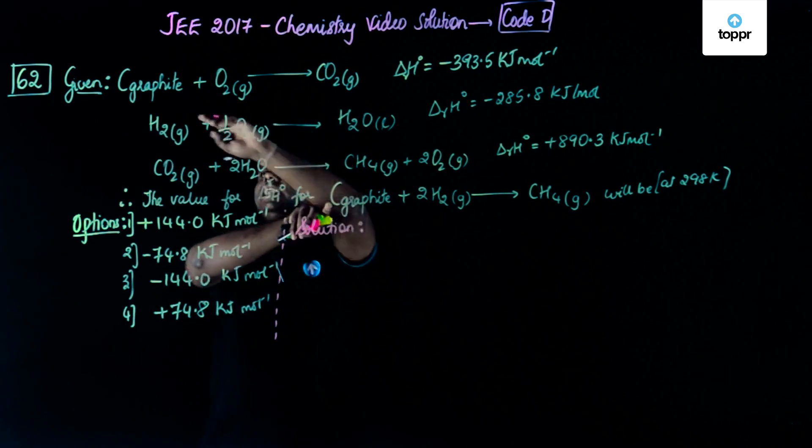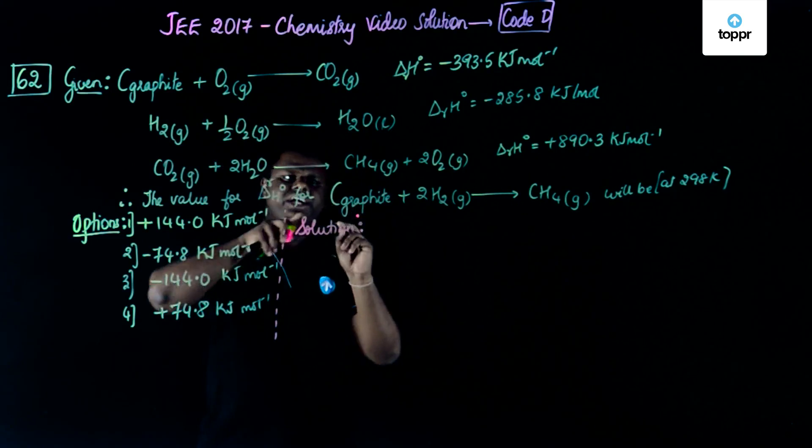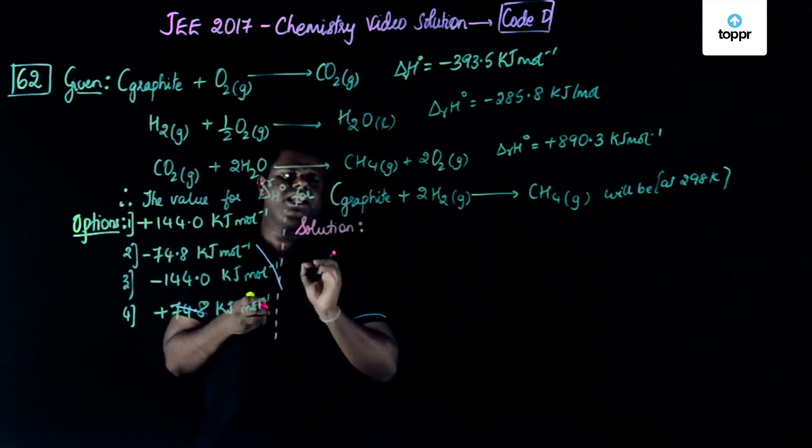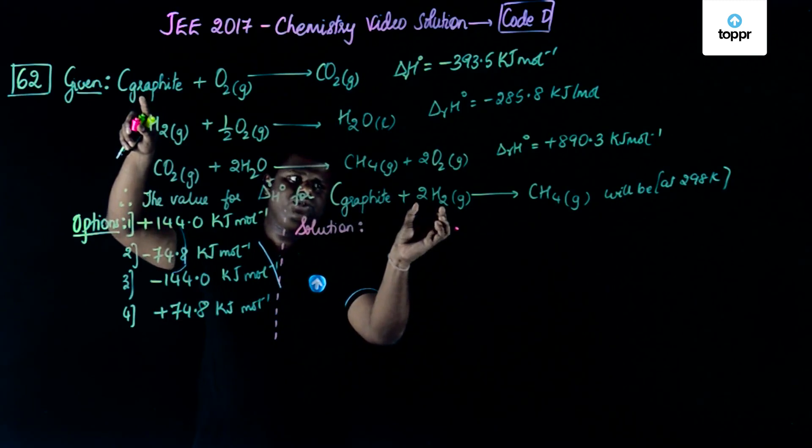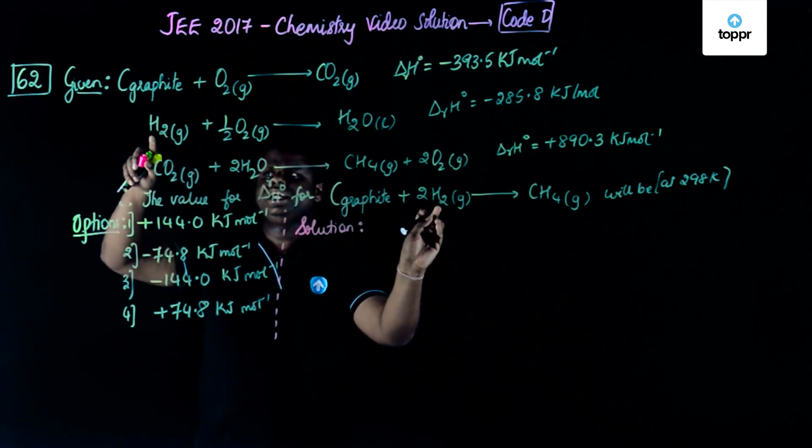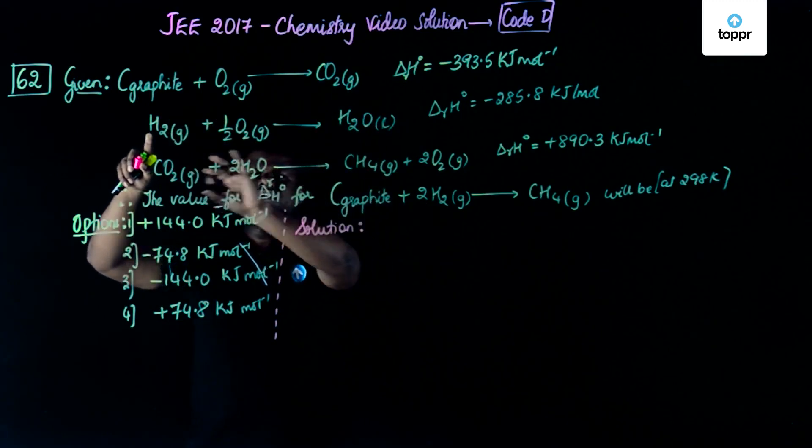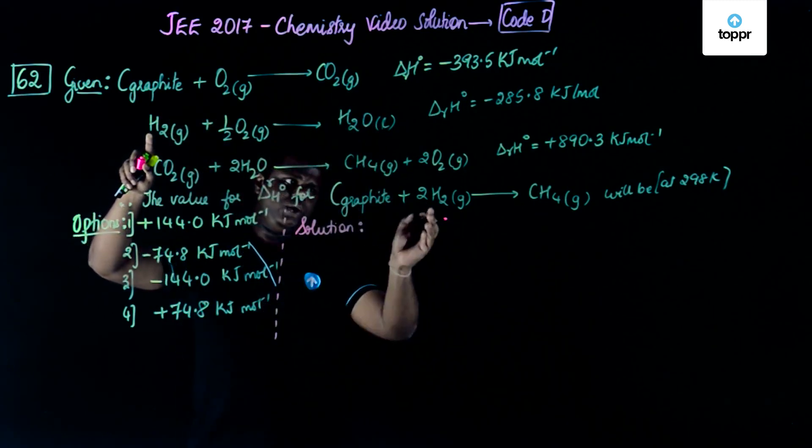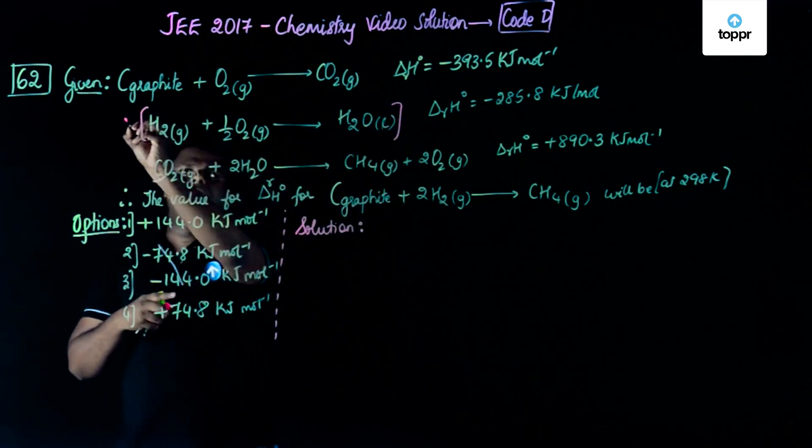Carbon graphite and carbon graphite are the same. Just try to see what all terms are there in the final equation: carbon graphite, then you have hydrogen, two moles, two moles of hydrogen gas. Here there is only one mole of hydrogen gas. Just have a look whether in any of the equations hydrogen gas has been used? No. So that's a straightforward indication that this equation should be multiplied by 2.